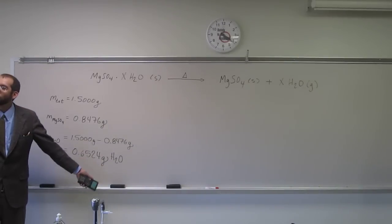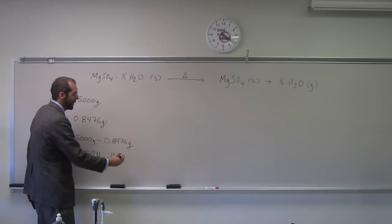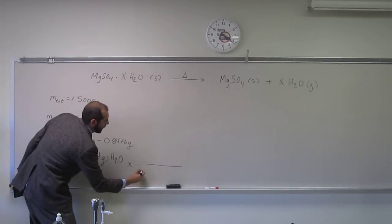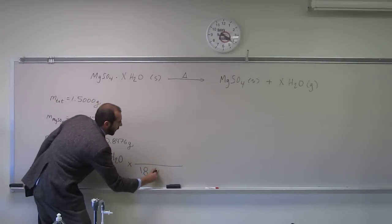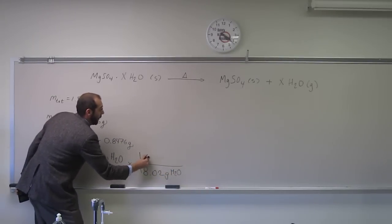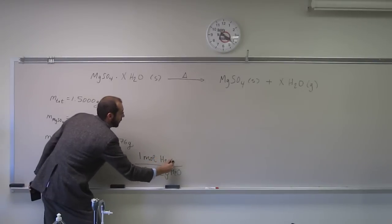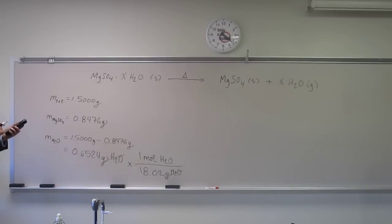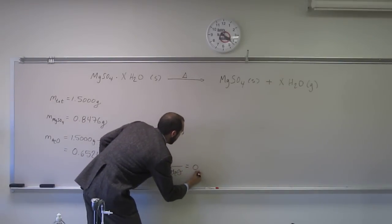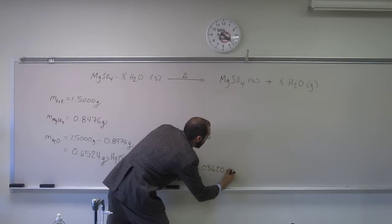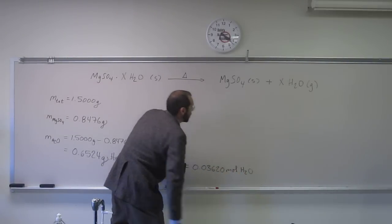Molar mass, right? We have mass to moles. So what is the molar mass of water? Do you guys recall? 18. Yes. So what are we going to put on the bottom here? 18.02 grams of water. And on the top? 1 mole of water. I think it's good to keep that because we're going to have to figure out moles of other things. So I get 0.03620 moles of water. Is everybody okay with that?